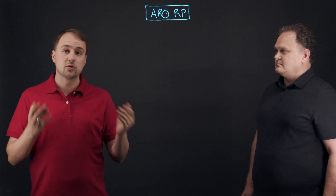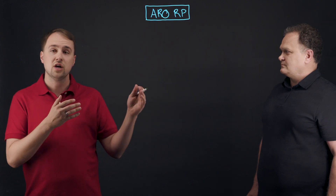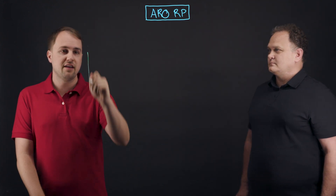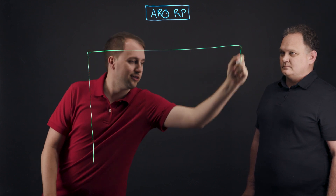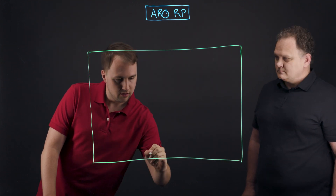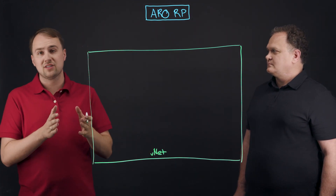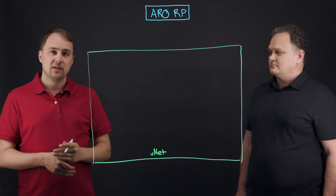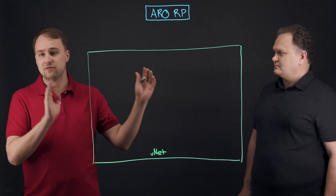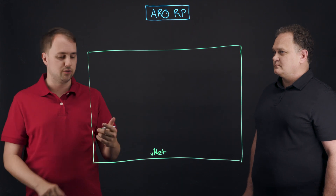Absolutely. The ARO Resource Provider is a really important part of the ARO service, but in addition to that, there are a lot of other components in the service that are really important for us to talk about. As we're talking about the network architecture, the first thing we need to talk about is the primary VNet specifically used to house your cluster. That VNet — this big box right here — is essentially your own slice of the Azure network.